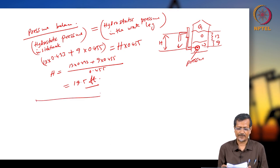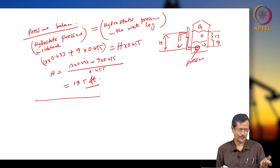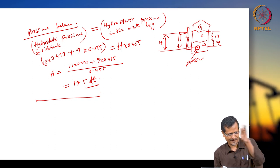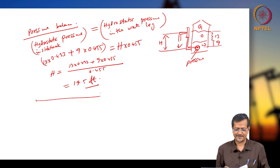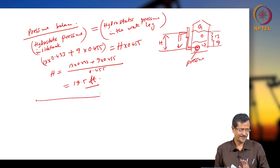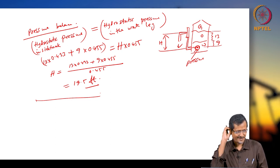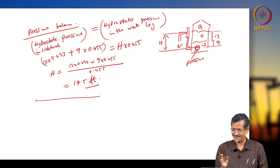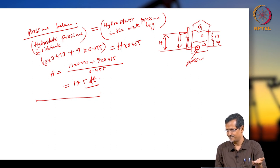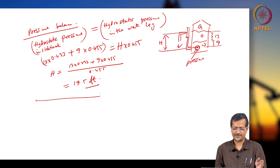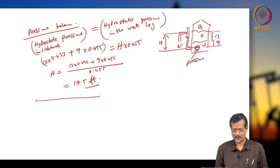Similarly, I can change some data, twist the problem, and ask you to calculate the water leg height — or I can give the water leg height and ask you to calculate the interface level. One parameter will be kept unknown and others given. If you understand these steps, this type of problem is very easy to solve.